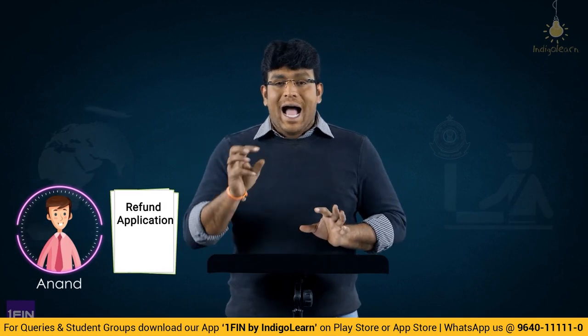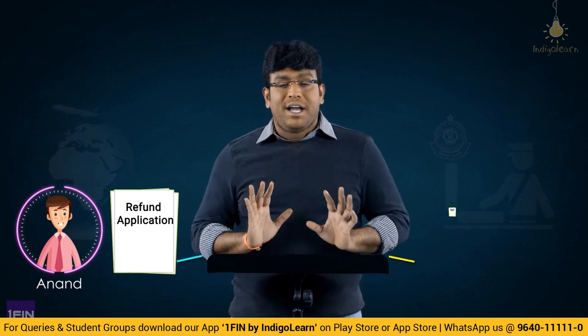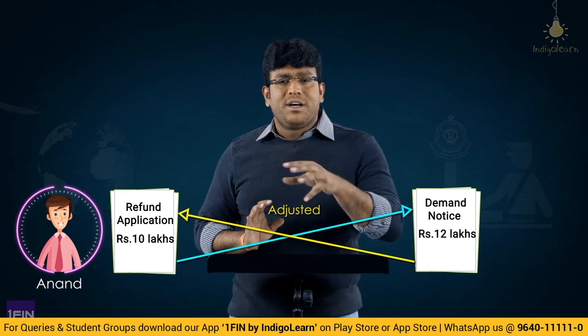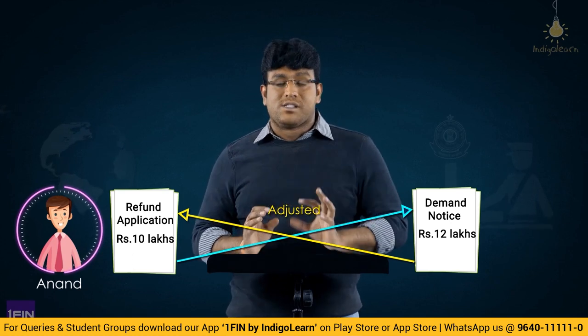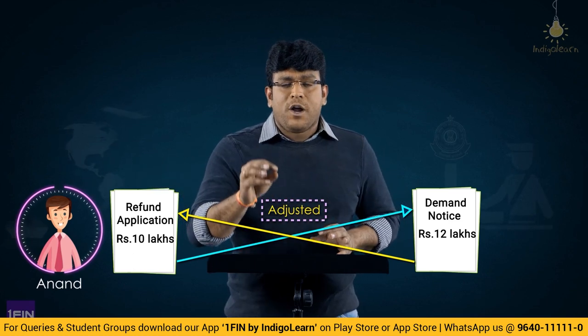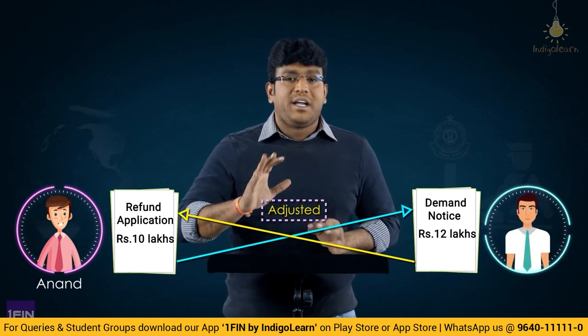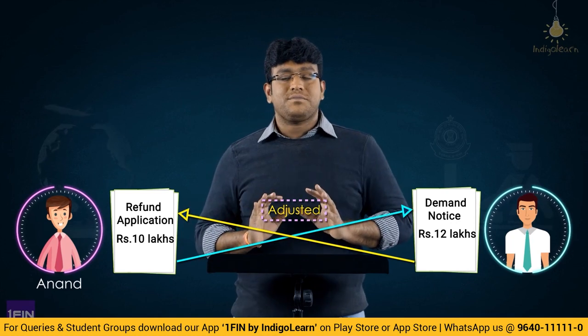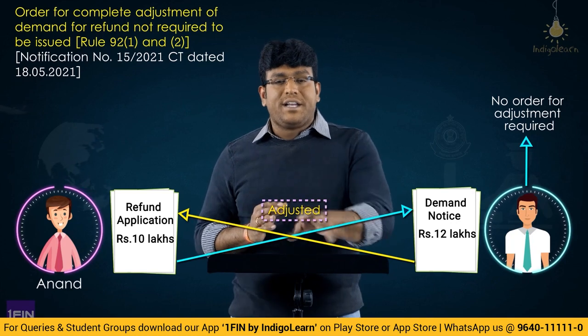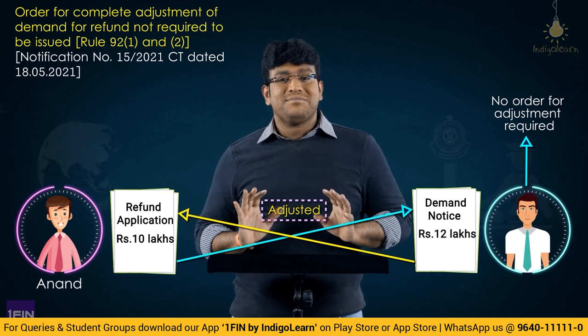One more interesting amendment in the refunds topic: if a person made a refund application for 10 lakhs but there is an outstanding demand of 12 lakhs, the refund is adjusted towards the outstanding demand. Earlier, the proper officer was required to pass an order stating that the refund is adjusted towards the outstanding demand. But now that concept is removed — even though the refund is adjusted towards outstanding demand, there is no requirement for the proper officer to pass such an order.